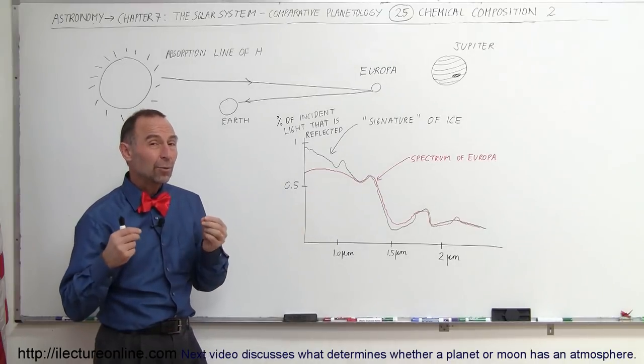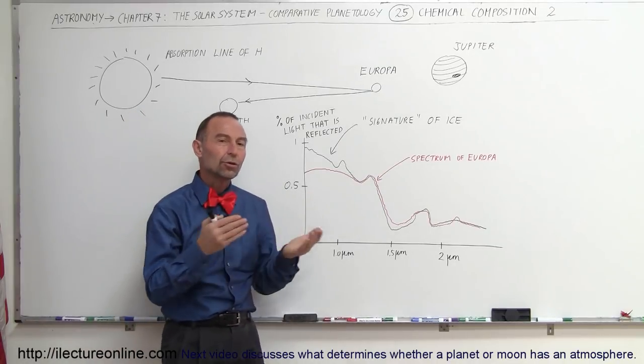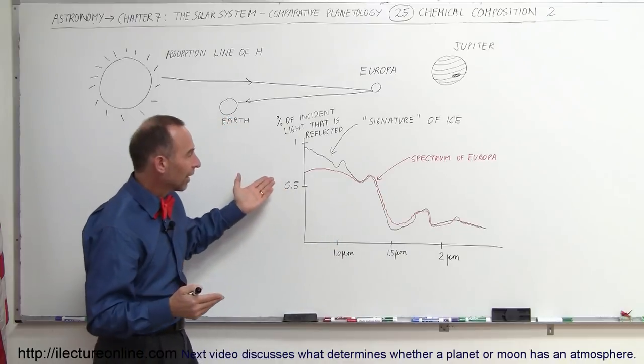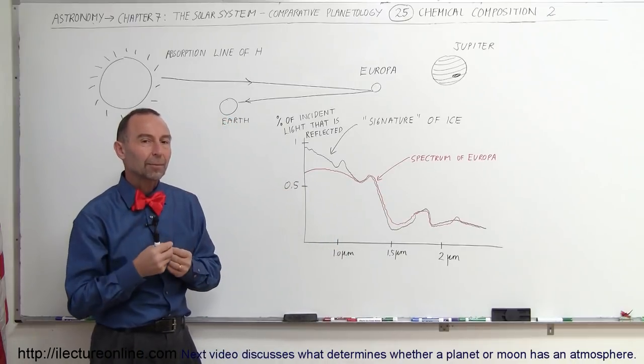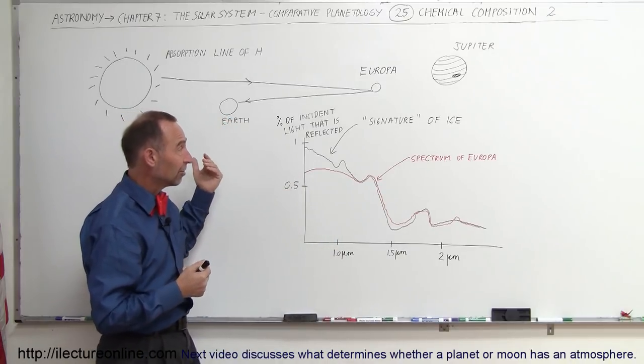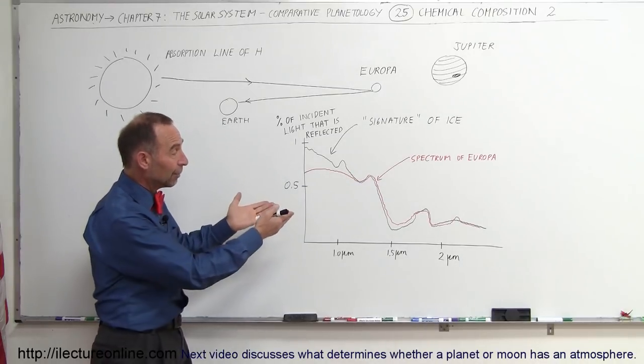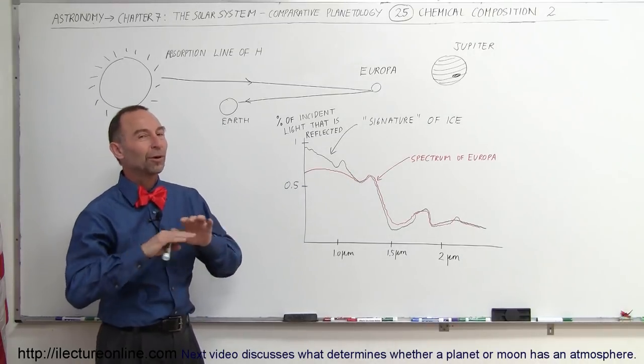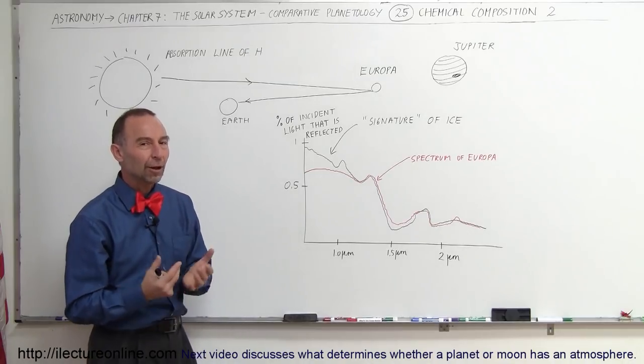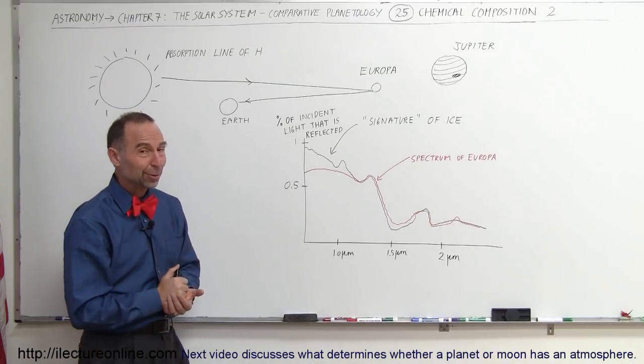But here again, that's the way we determine what things in the universe are made out of. We can analyze the spectrum of the light coming back from objects, in this case reflected sunlight coming from Europa, and almost without a doubt we can say Europa is probably almost completely covered by water ice. And that's how we do that.